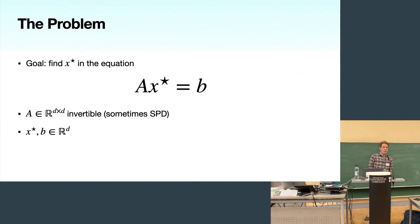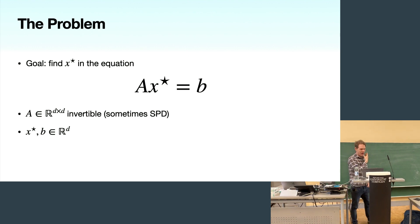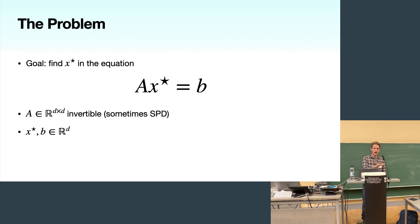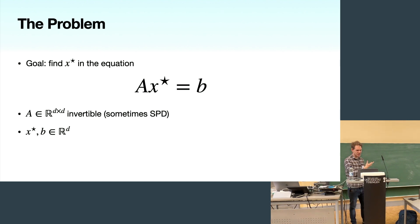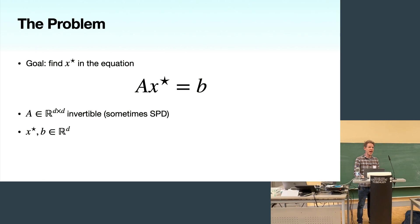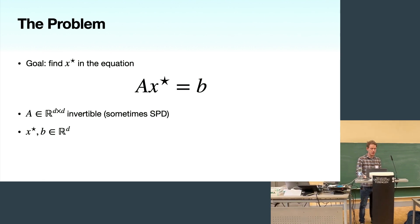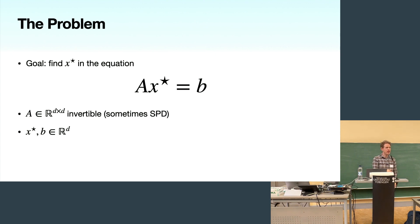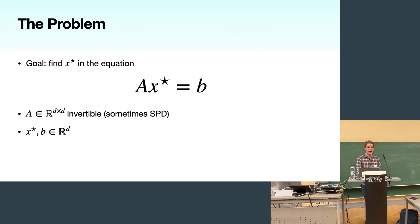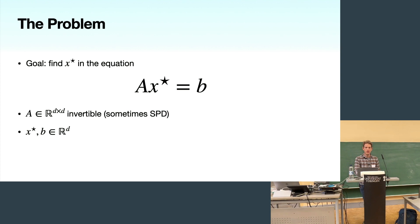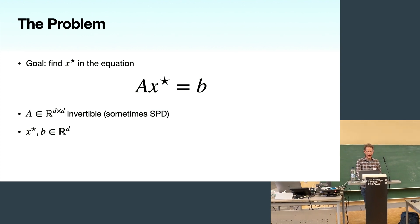Let's start with the problem we're interested in solving: a linear system, AX* = B. The goal is to find X*, the unknown vector, where A is a given D-by-D matrix which we assume to be invertible, and B is a D-dimensional vector which we're given and allowed to interrogate at will.